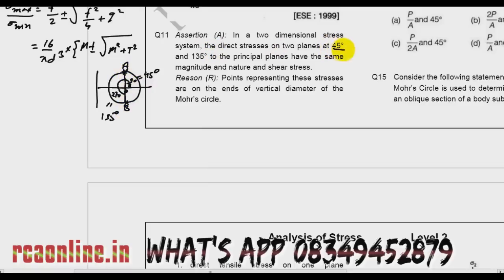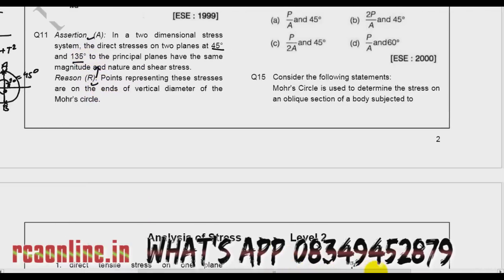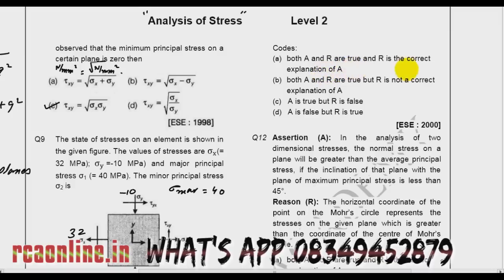So these two points — at 45° and 135° — are on opposite sides of the Mohr circle and represent equal stress. Both A and R are true and R is the correct explanation of A. So A is my answer.